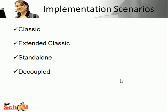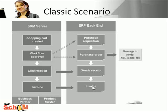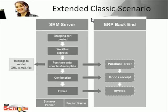Now we take a quick look at certain implementation scenarios which drive how the SRM server interacts with other core systems like ERP. The first one is the Classic Scenario: you implement the SRM server and one or more ERP systems. All shopping carts refer to Material Management processes in your ERP backend, and your ERP system is the leading system. Goods receipts and invoices can be entered in the SRM server or in the ERP backend.